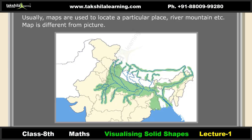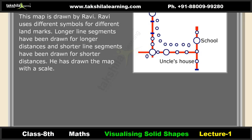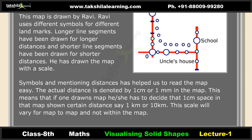It is very difficult to find which place is near from Radha's house using her map, because we do not know the distance between circles — there is a lack of information and we cannot answer the questions. By contrast, Ravi uses different symbols for different landmarks, with longer line segments for longer distances and shorter line segments for shorter distances, drawing the map with a scale.